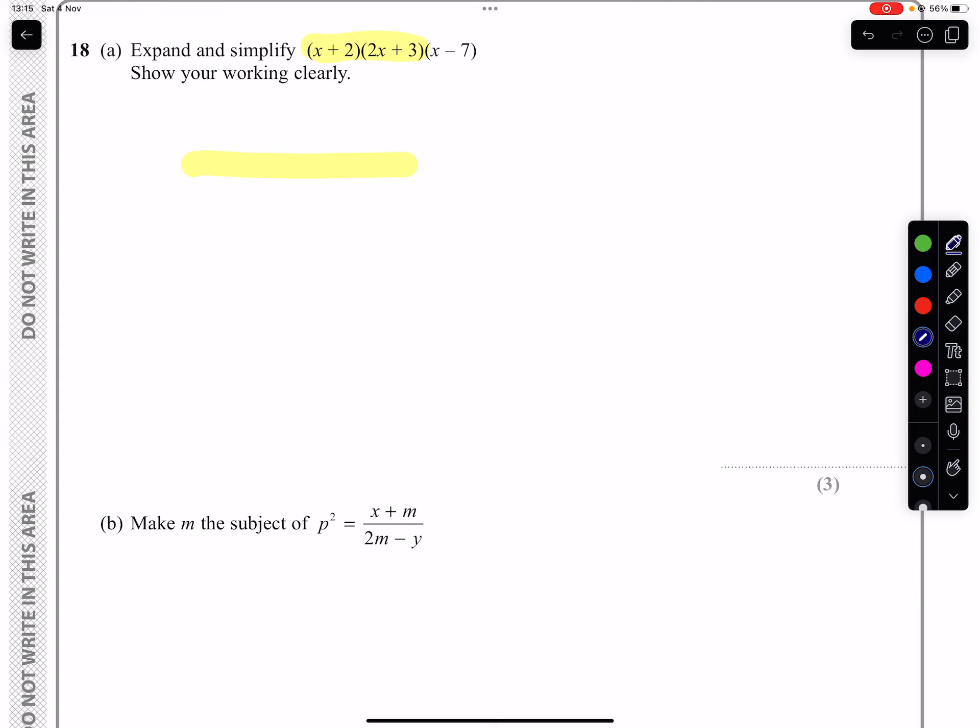So if I multiply x by 2x, I get 2x squared. x by 3, I get a 3x. A 2 by 2x, I'm going to get a 4x. And a 2 times 3 will give me a 6. And tidy that up, I will get 2x squared plus 7x plus 6 as the answer to that yellow section.